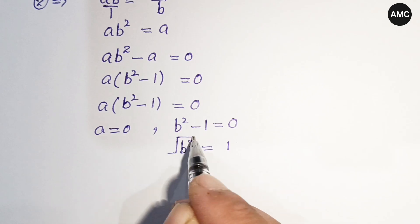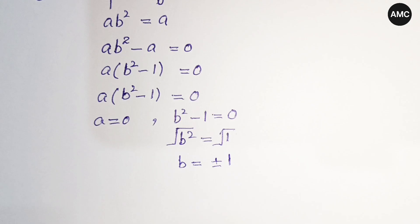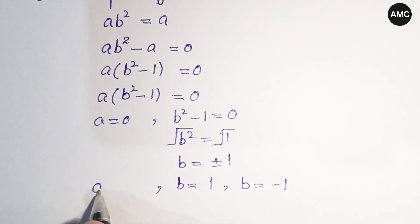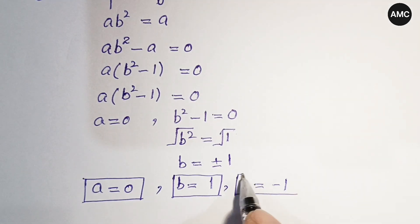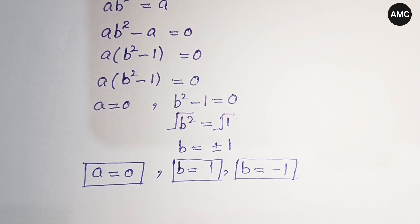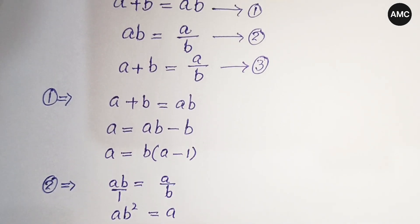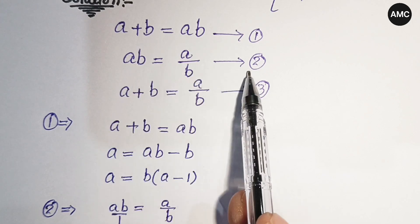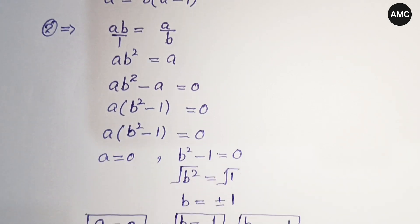Using the algebraic factoring rule, this gives a times (b plus 1) times (b minus 1) equals zero. So either a equals zero, or b squared equals one, meaning b equals plus or minus one. We now have three cases to check in our original equations.